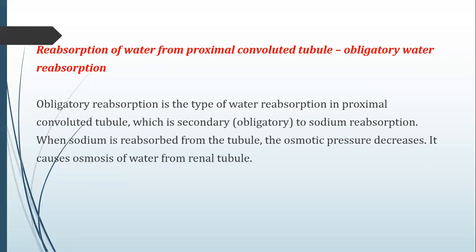In the proximal convoluted tubule, water reabsorption is obligatory — secondary to sodium reabsorption. When sodium is reabsorbed from the tubule, osmotic pressure is decreased there, causing osmosis of water from the renal tubule. Osmosis is the movement of water molecules from a region of lower solute concentration to a region of higher solute concentration. When sodium moves from the lumen to the cell, to the interstitium, to the blood, water moves secondarily from the lumen to the blood.